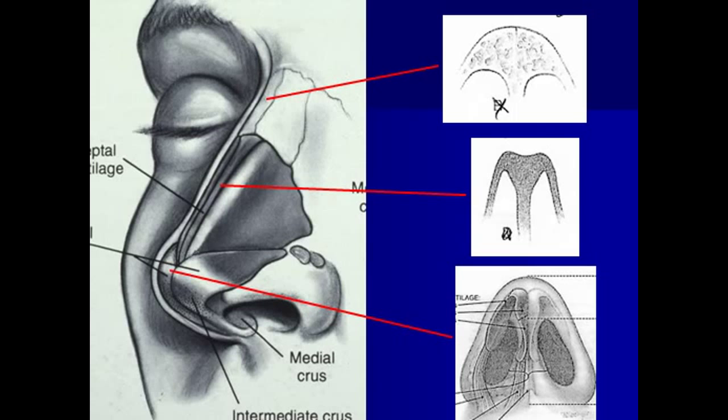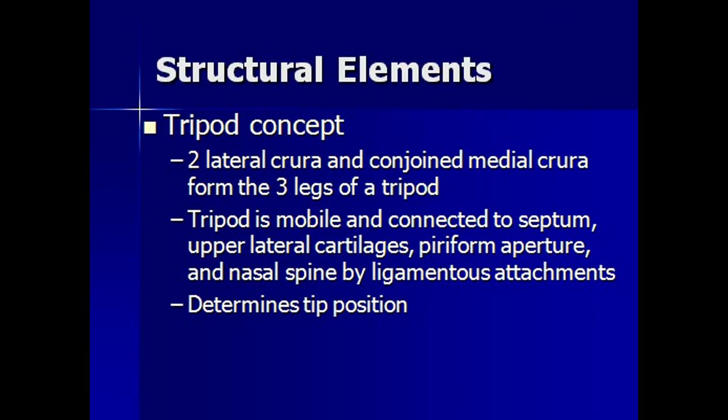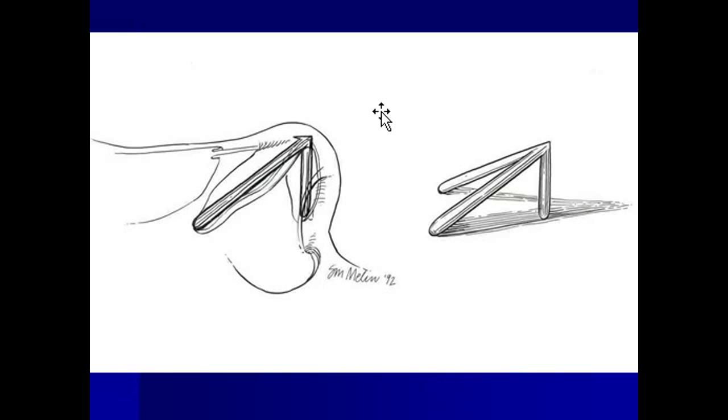The next anatomy component is the tripod. The tripod forms a three-pronged structure at the base of the nose, which contributes to the position and shape of the nasal tip.